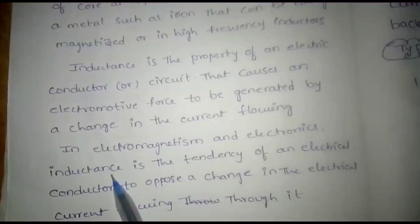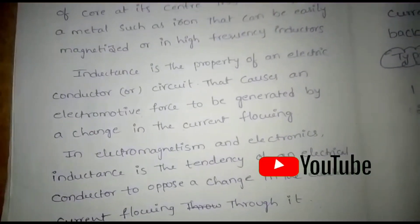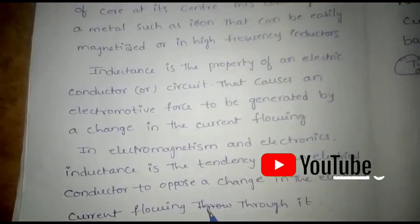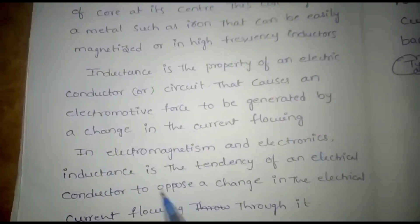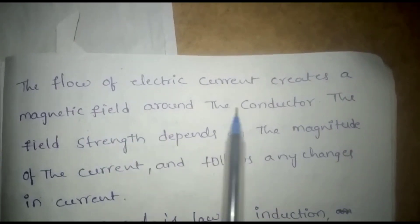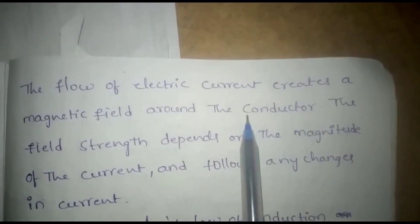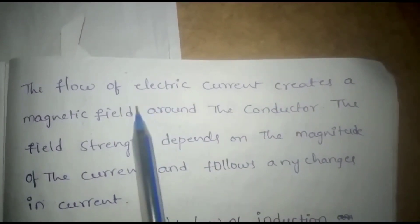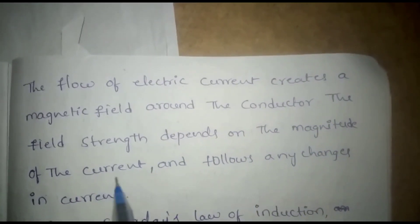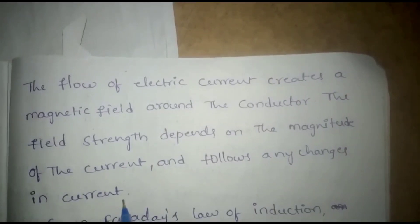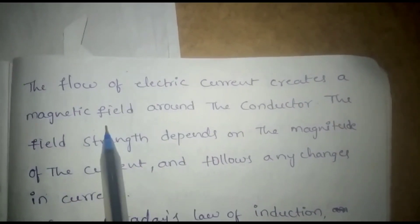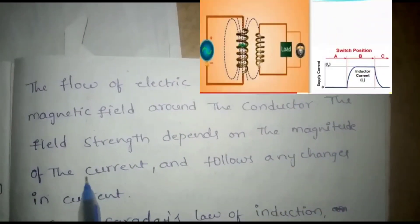The flow of electrical current creates a magnetic field around the conductor. The current creates a magnetic field, and the field strength depends on the magnitude of the current. Any changes in current also create changes in the magnetic field.